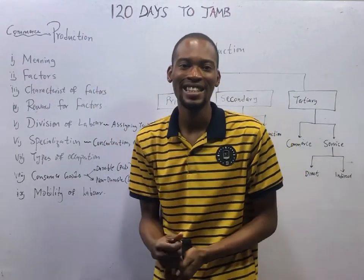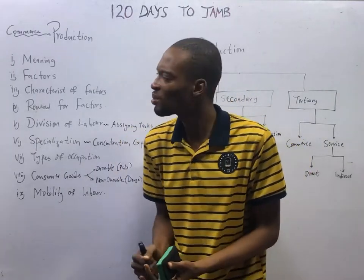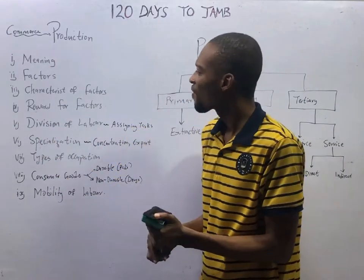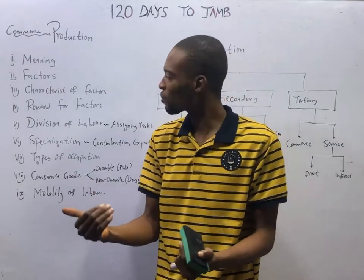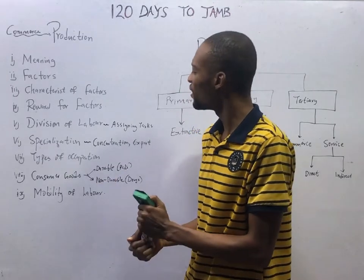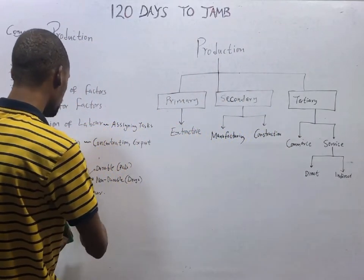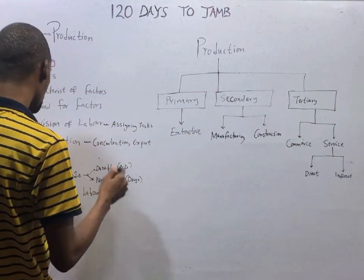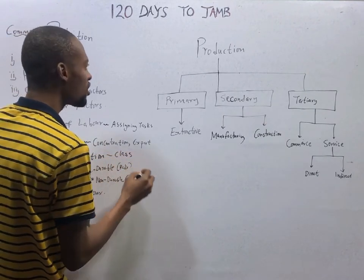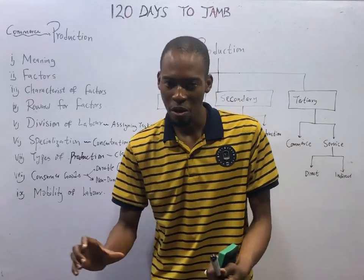This is a major topic that Jamf expects you to understand. Under production, you need to know the meaning of production, the factors of production, characteristics of the various factors of production, reward for the factors of production, division of labor, specialization, types of production, the classification of production, consumer goods, and mobility of labor.